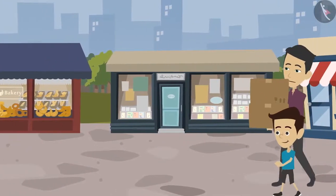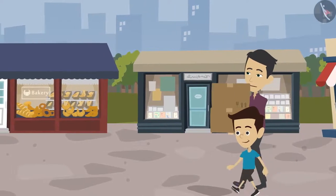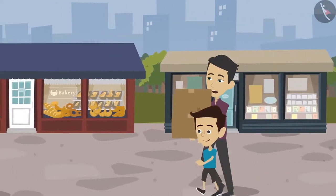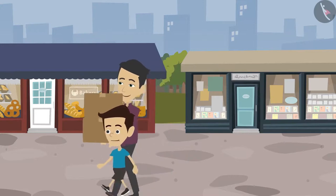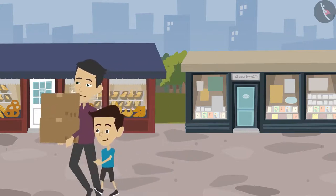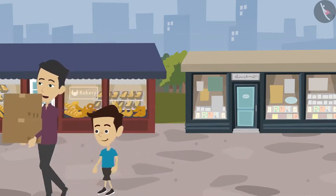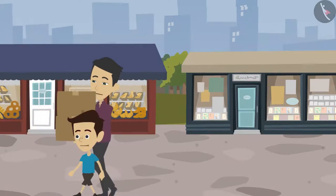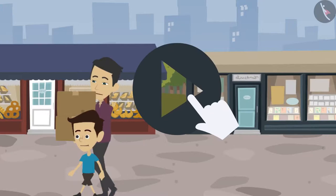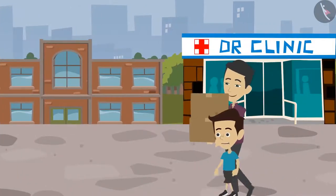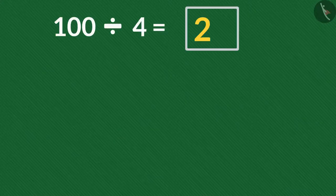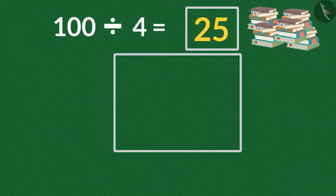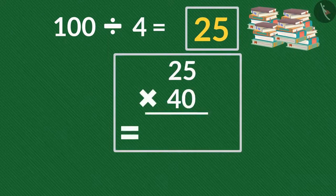Now take one fourth of the books we bought and give them to your uncle and ask him to pay rupees 1500 for them. Dad, but first tell me how many books you will give him. You can pause the video if you want and think about it. 100 divided by 4 is 25, so I will give 25 books to him.